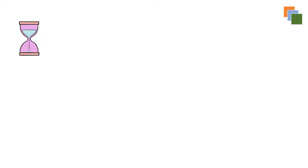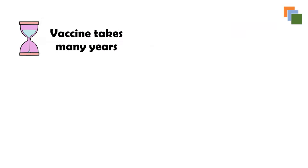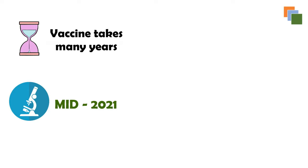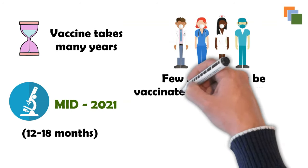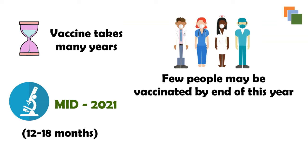As we just saw, a vaccine would normally take years if not decades to develop. Researchers are trying hard to achieve the same amount of work in only a few months. Most experts think a COVID-19 vaccine is likely to become widely available by mid-2021, about 12 to 18 months after the virus first emerged. Scientists are also optimistic that if trials are successful, a small number of people such as healthcare workers may be vaccinated before the end of this year — which would be a huge scientific feat.